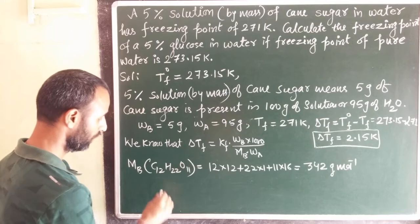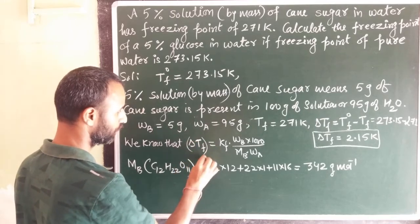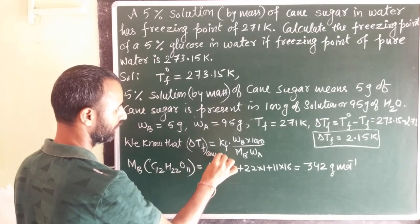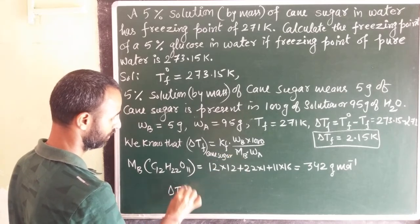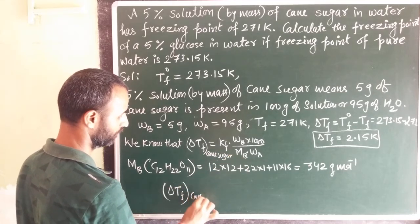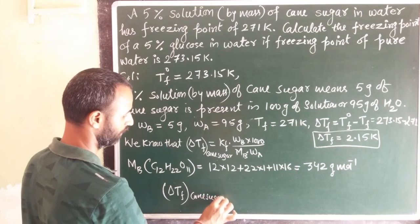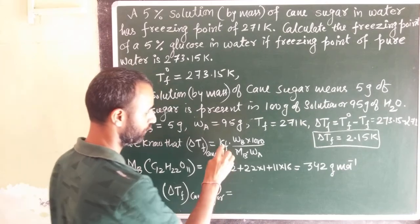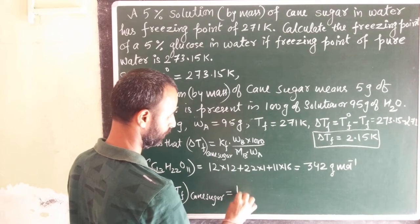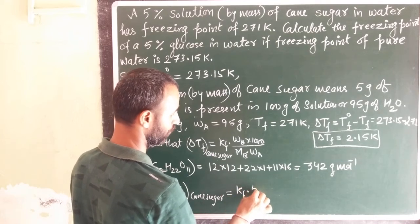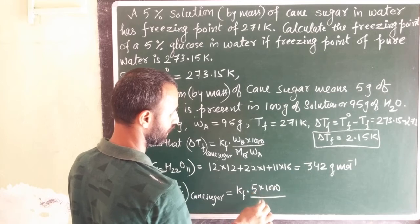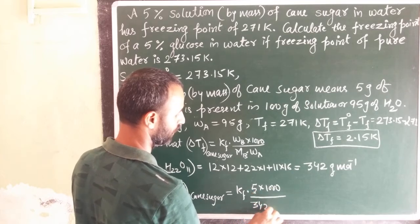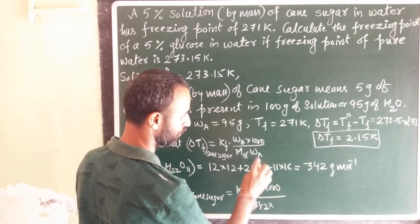Just put the values. This delta Tf is for cane sugar. So delta Tf of cane sugar is equal to Kf into 5 into 1000 divided by 342 into WA.